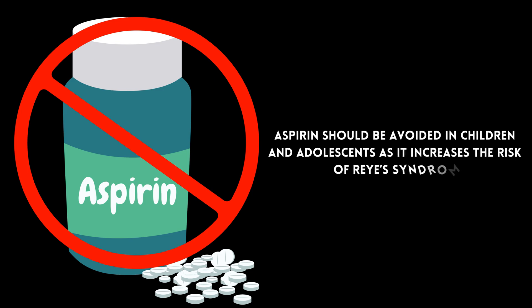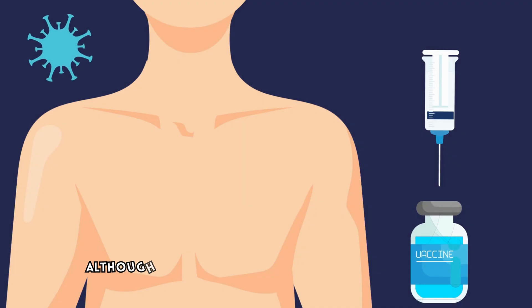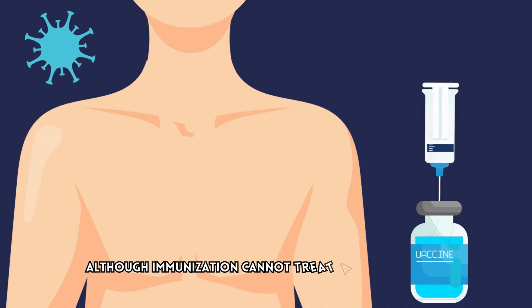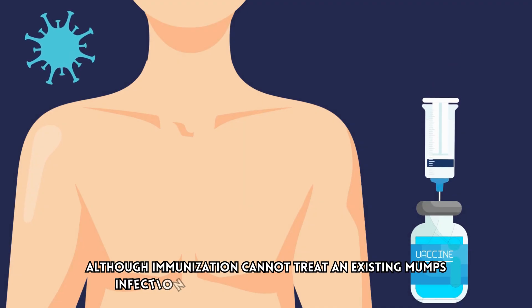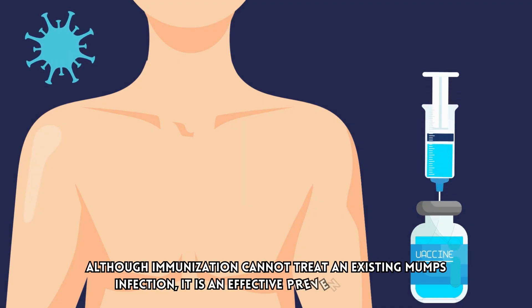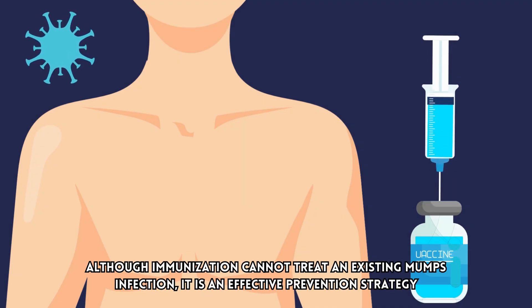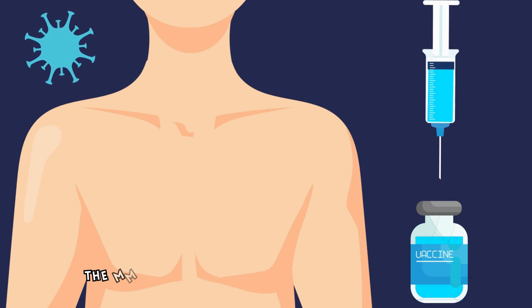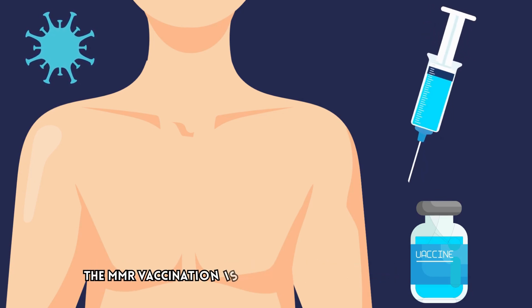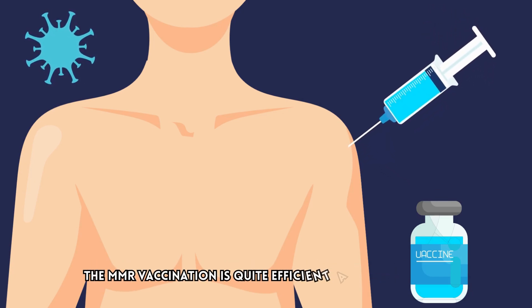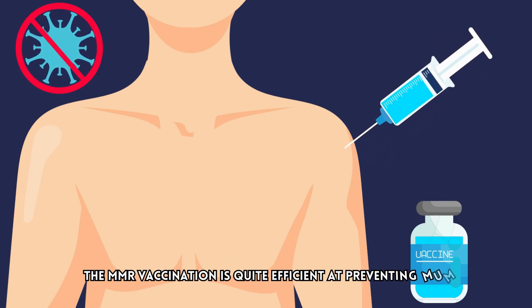If complications occur, they should be identified and corrected early. Although immunization cannot treat an existing mumps infection, it is an effective prevention strategy. The MMR vaccination is quite efficient at preventing mumps.